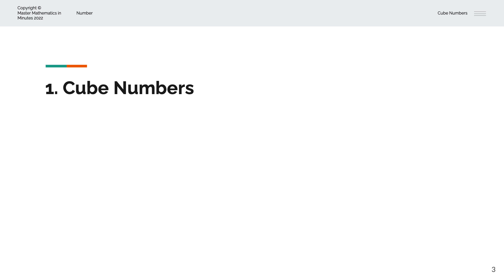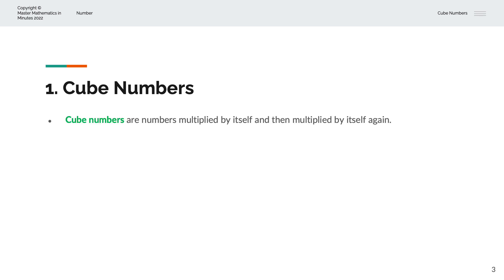So what are cube numbers? Cube numbers are numbers multiplied by itself and then multiplied by itself again.